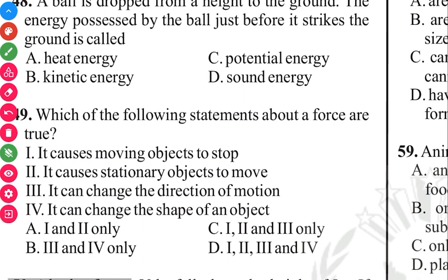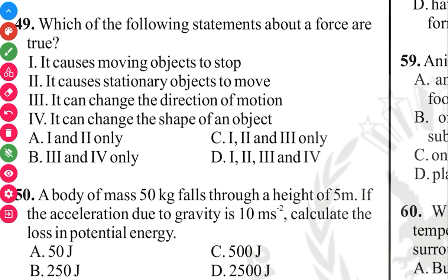Question 50. A body of mass 50 kilograms falls through a height of 5 meters. If the acceleration due to gravity is 10 meters per second squared, calculate the loss in potential energy. The answer in 3, 2, 1. We have to work this. Potential energy equals mass times acceleration due to gravity times height. So the mass is 50 multiplied by 10 multiplied by 5. So this multiplied by this, you are getting 50 times 50. You are getting 2500. So the answer is D.